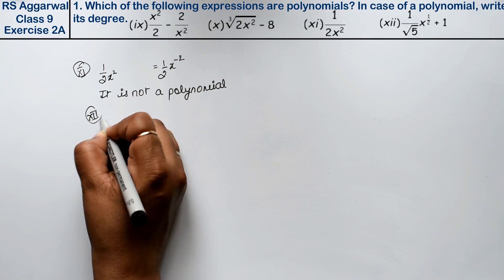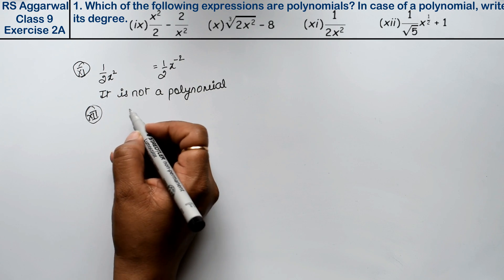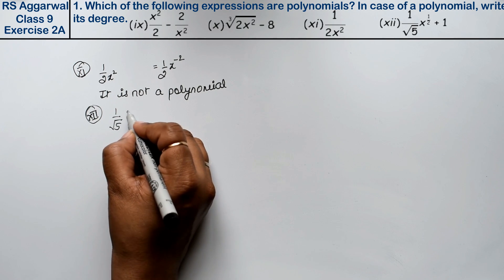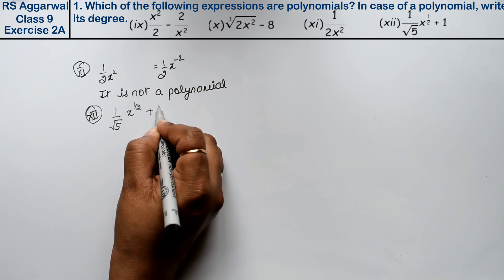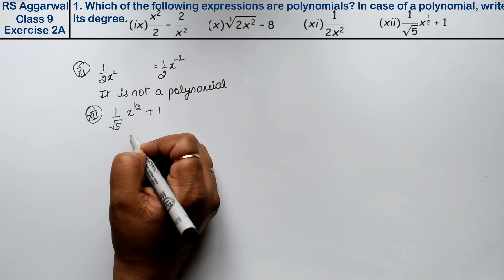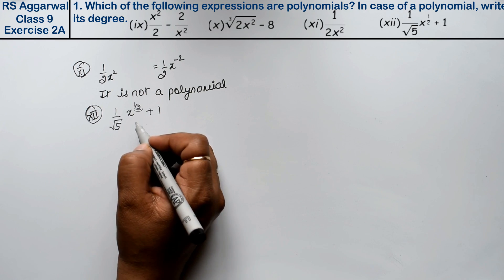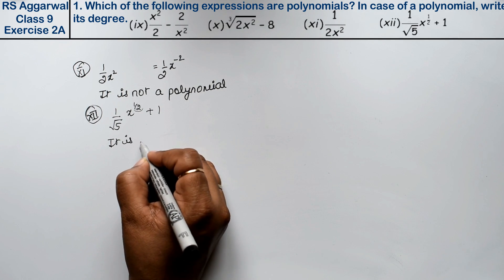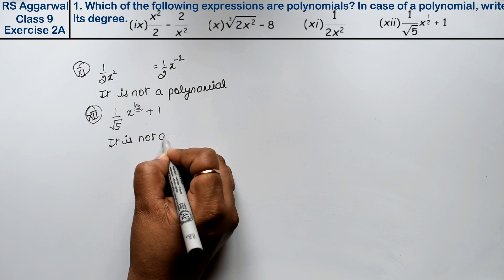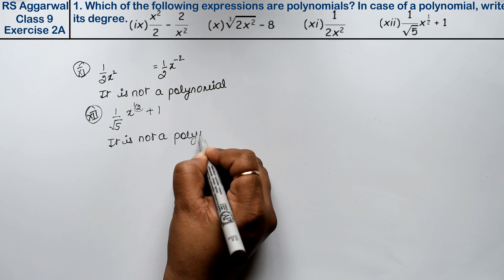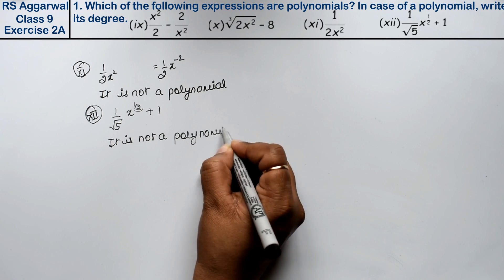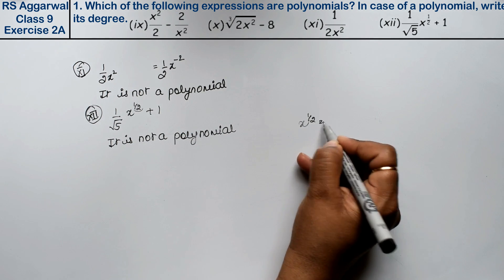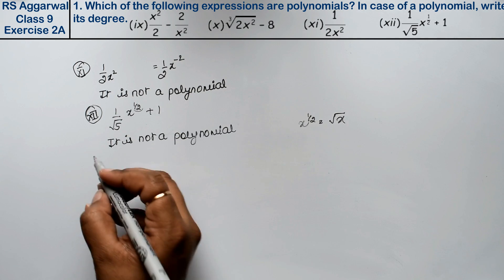Twelfth part is (1/√5)x to the power 1/2 plus 1. Whenever the power comes in fractional form, that is not a polynomial. x to the power 1/2 can be written as square root of x, so it is not a polynomial.